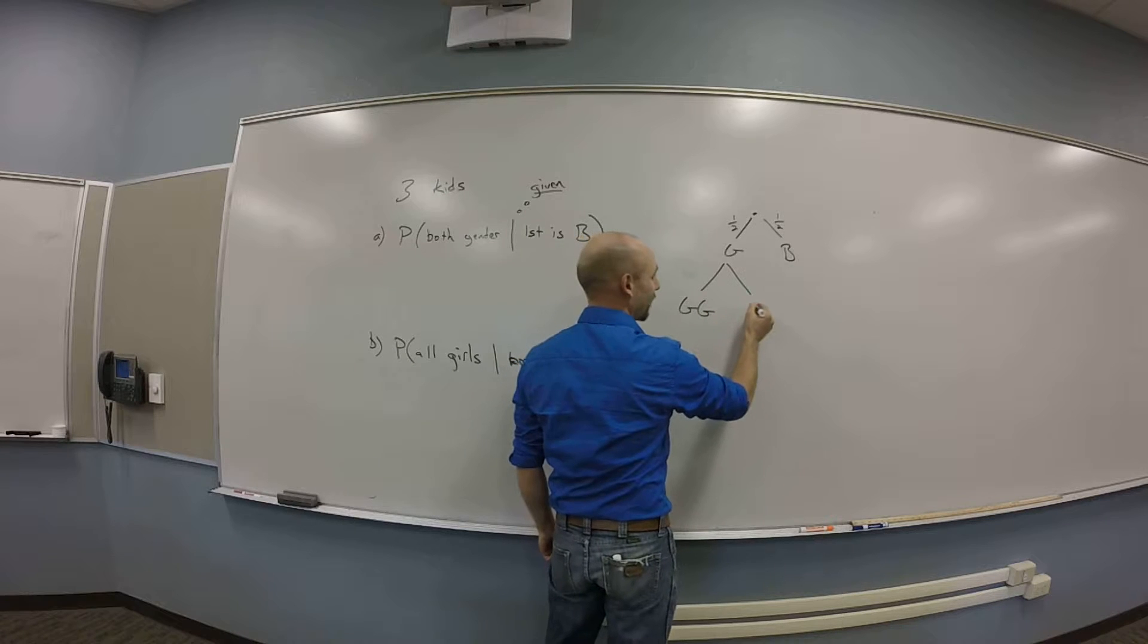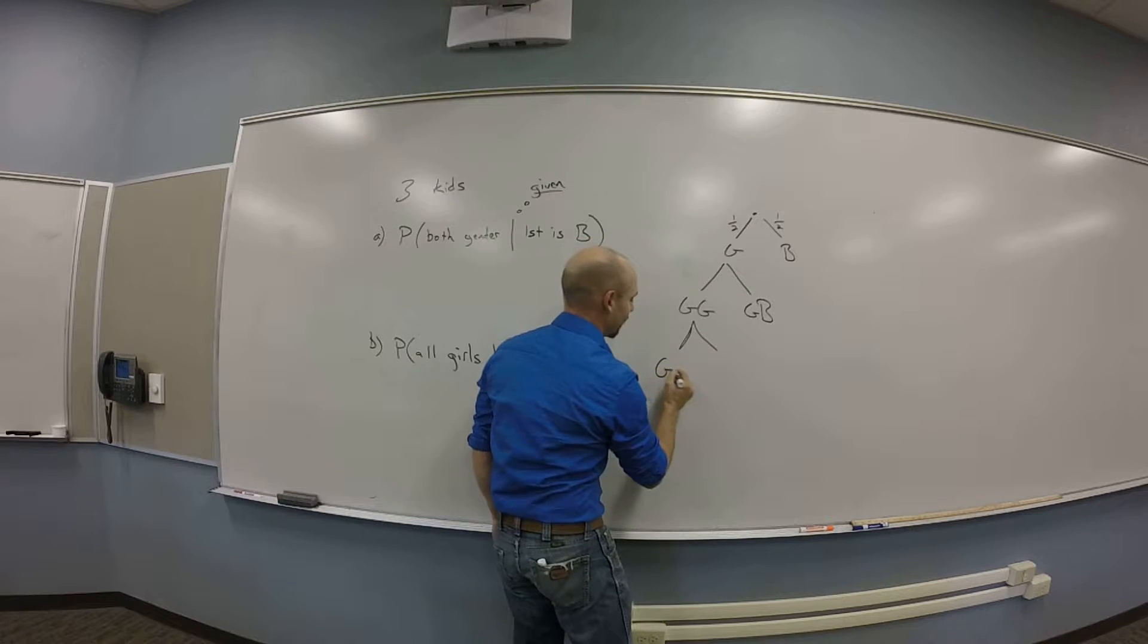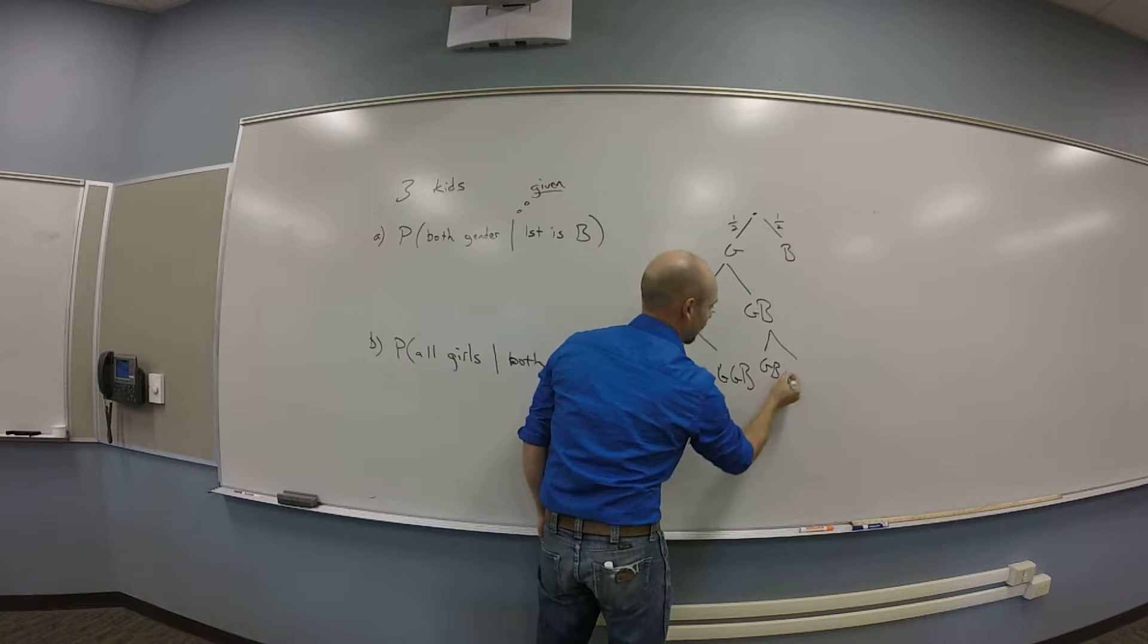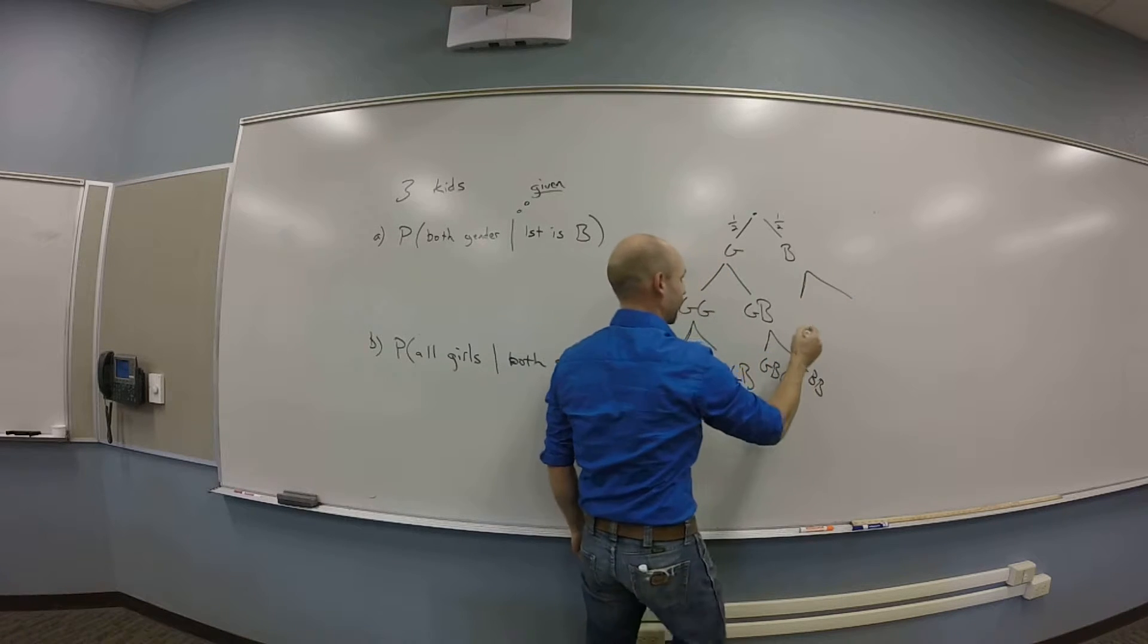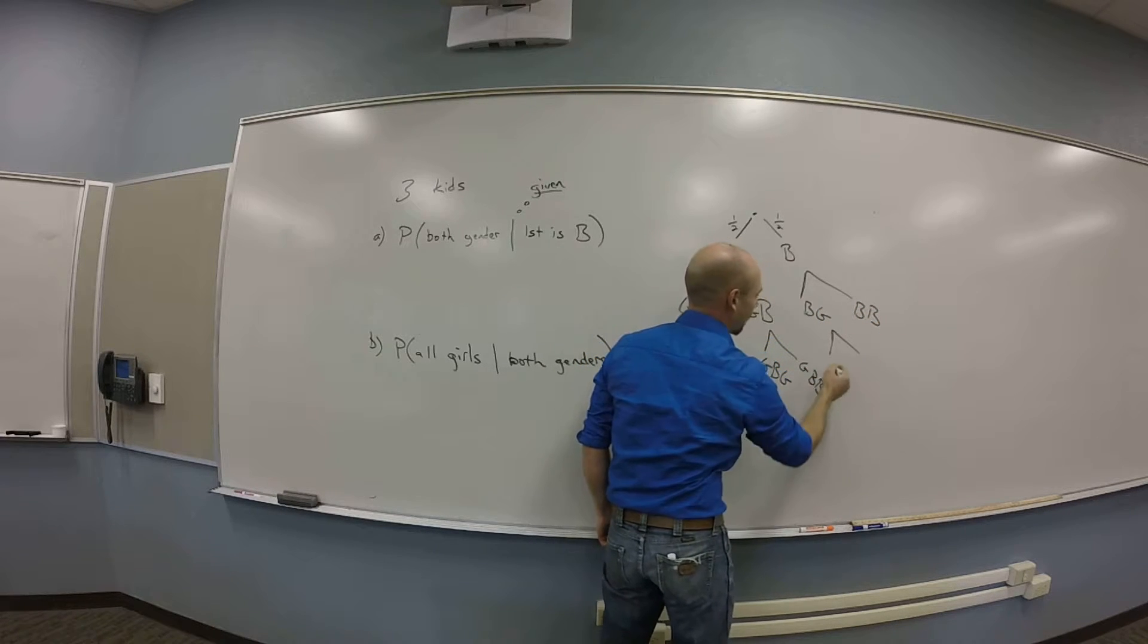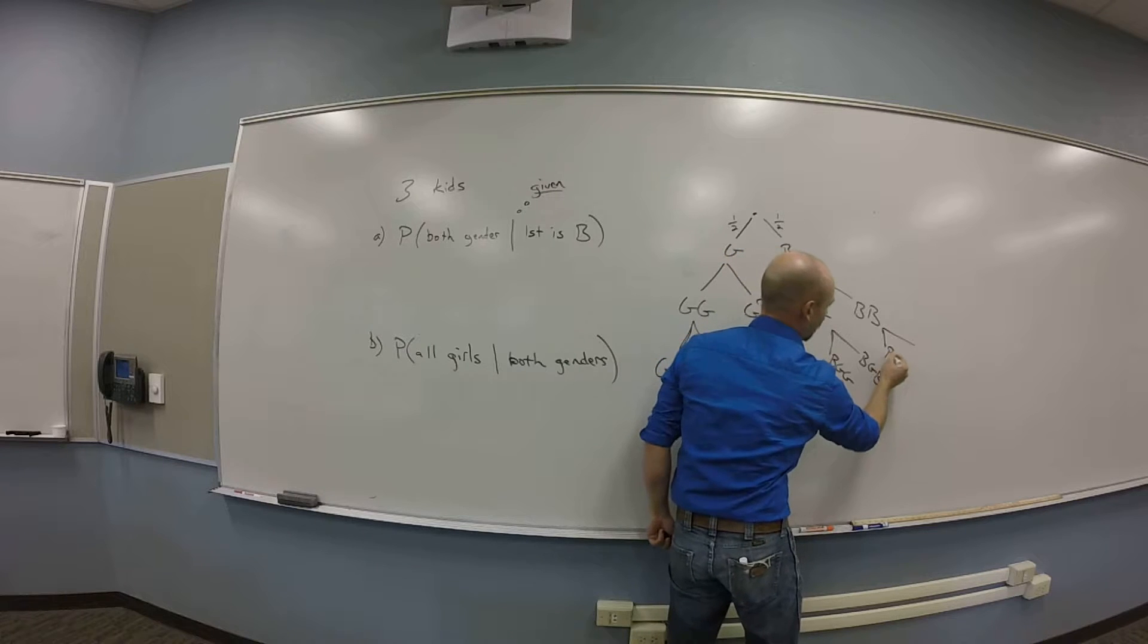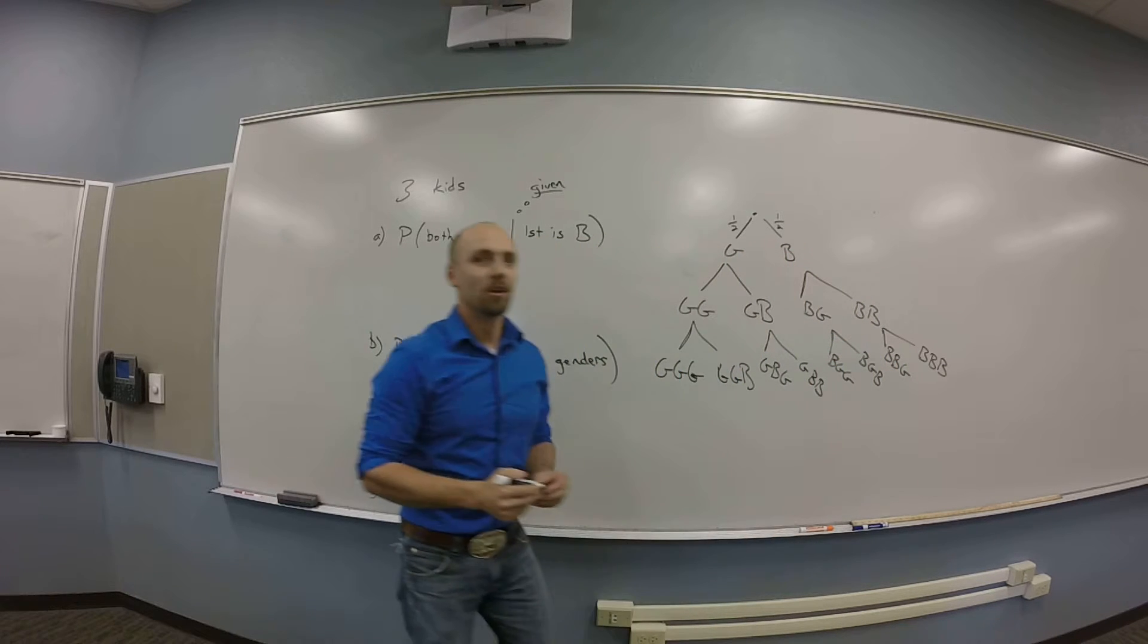So there's the girl-girl branch, and then the girl-boy node, right? And then from here, there's going to be girl-girl-girl, girl-girl-boy, girl-boy-girl, girl-boy-boy. Then there's boy-girl-boy, boy-boy, and these branch into boy-girl-girl, boy-girl-boy, boy-boy-girl, and boy-boy-boy, right?